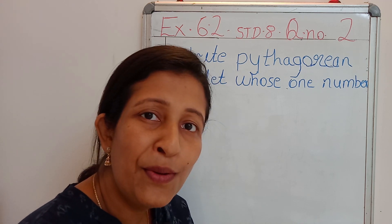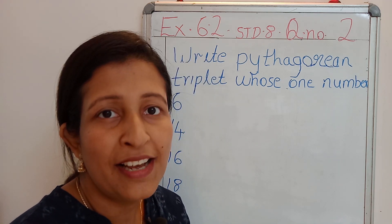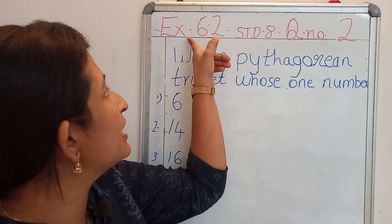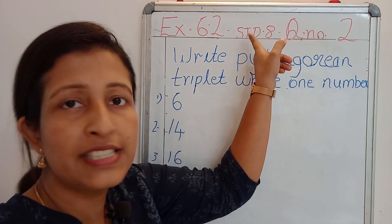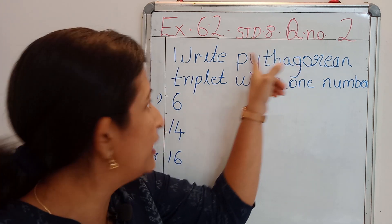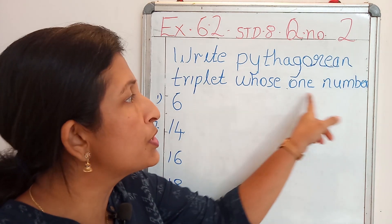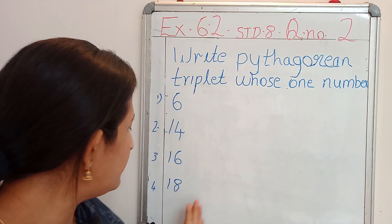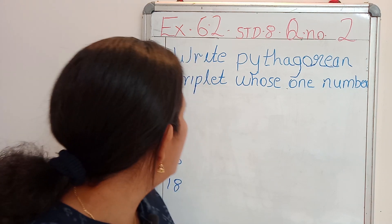Hi, hello. Welcome back to Max Ninjas. Myself, Femi B. John. Today we are dealing with exercise 6.2, question number 2, standard 8. Today we have to find out Pythagorean triplets whose one number is 6. We have 4 questions, so we can discuss one by one.